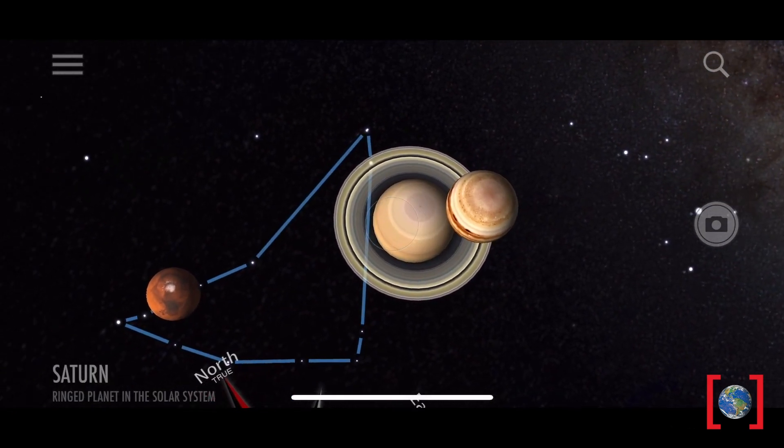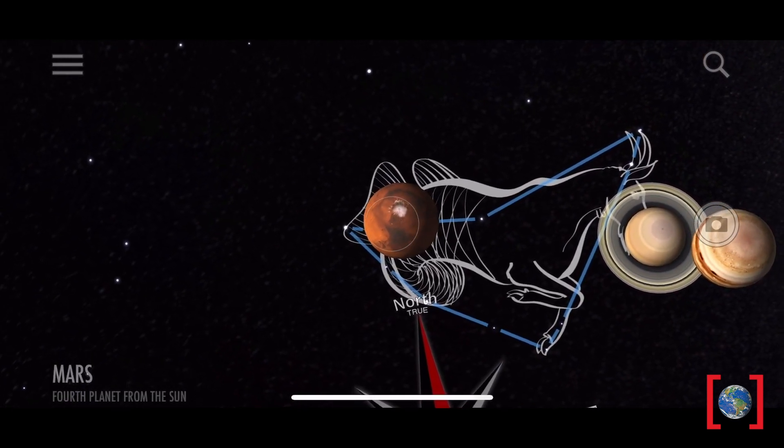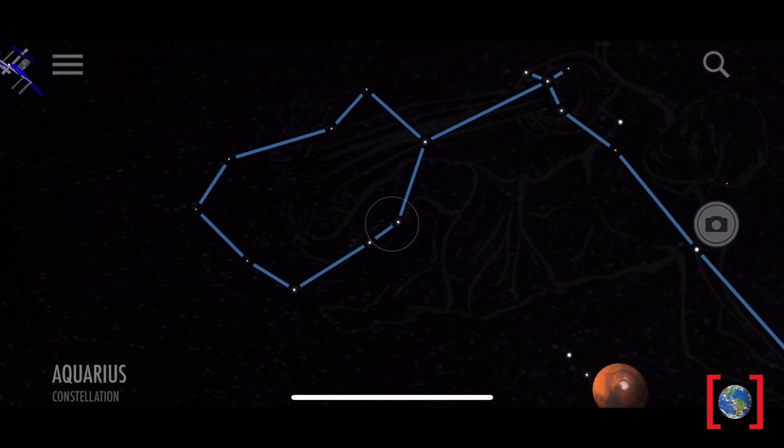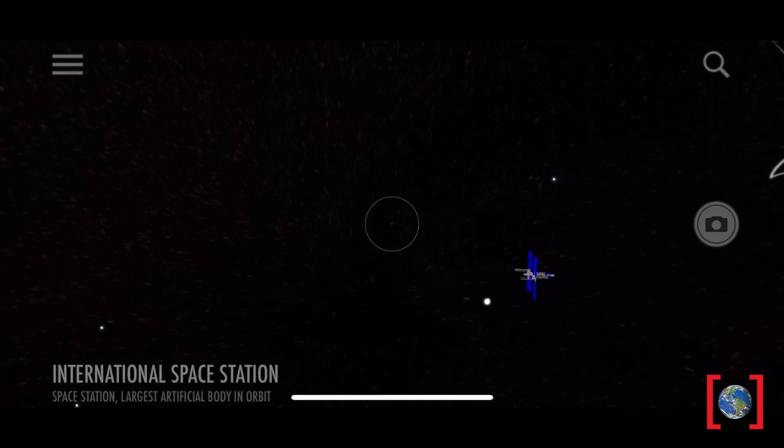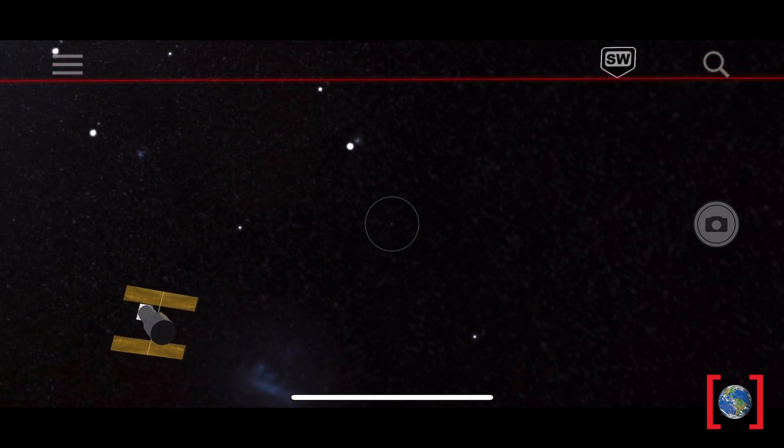There's Jupiter, Saturn, and Mars over there. Sometimes you can even spot the International Space Station where astronauts work.